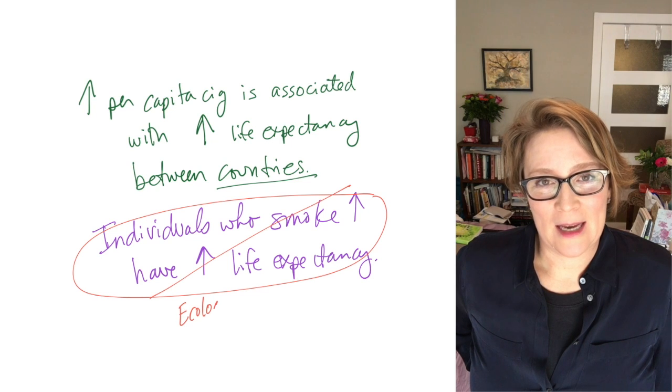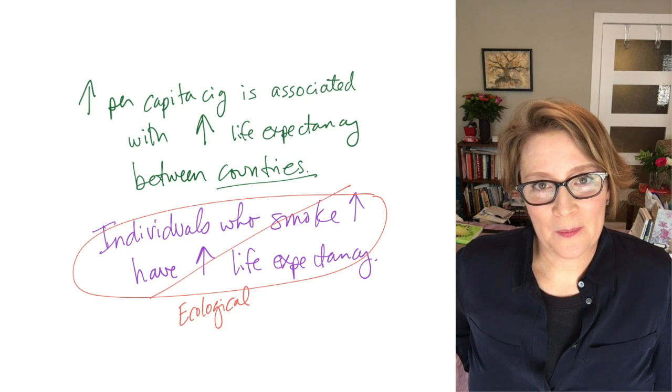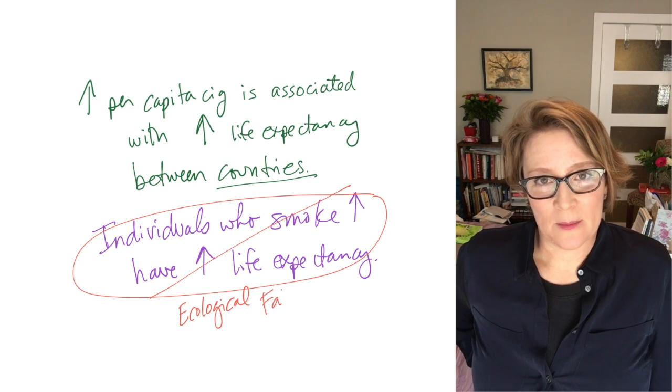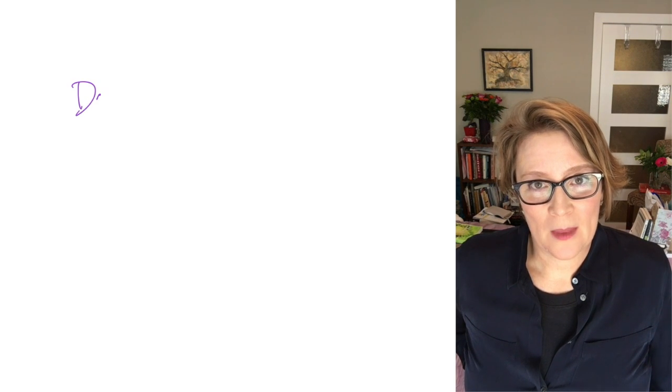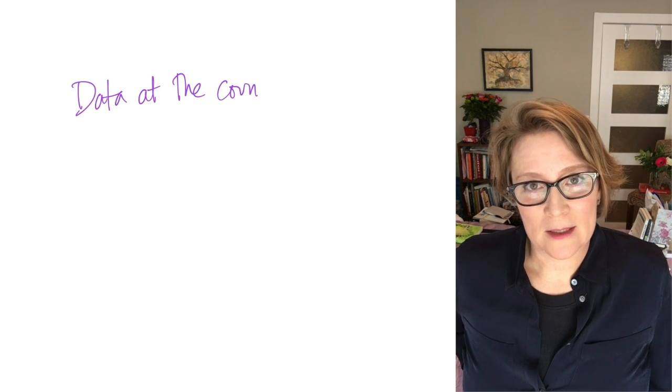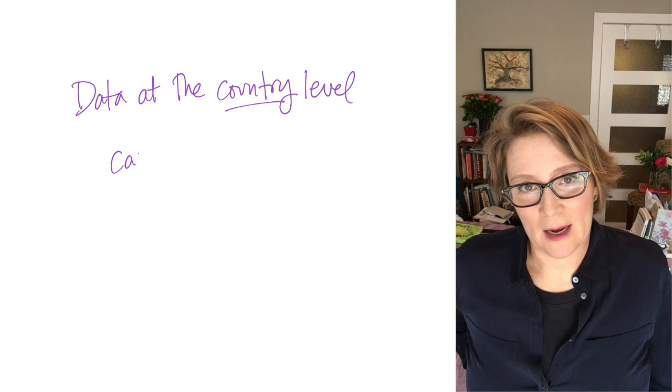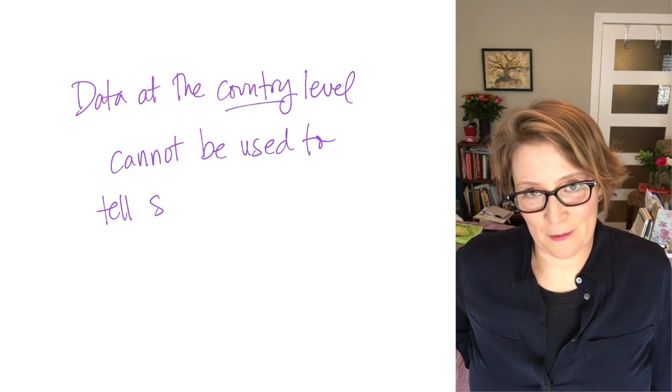You're taking data that's at the country level and you're making statements about the individuals in those countries. So that's what the ecological fallacy is—when you're trying to tell stories on a level of analysis that's different than the level of analysis of your data.